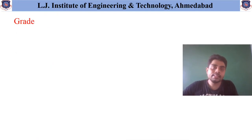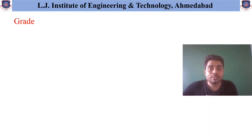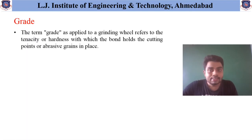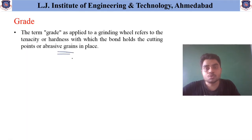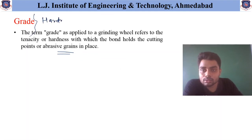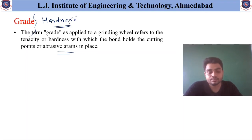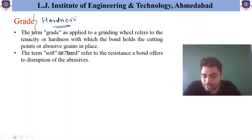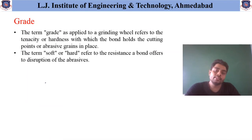The next part is grade. This term, as applied to grinding wheel, refers to the tenacity or hardness with which the bond holds the cutting points or abrasive grains in place. In other words, grade indicates the hardness level available in that wheel. Grades are indicated as soft, medium, or hard, and it is the resistance a bond offers to disruption of the abrasives.